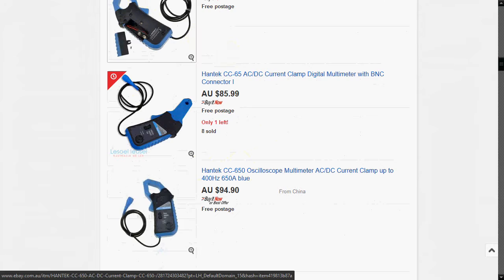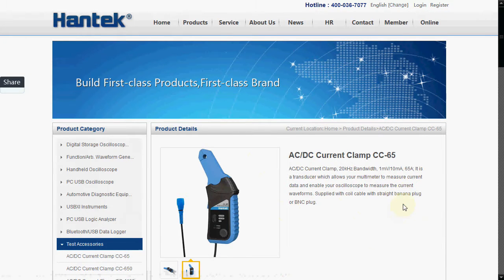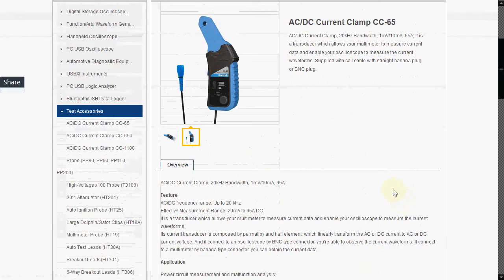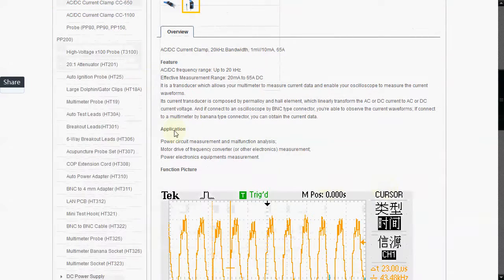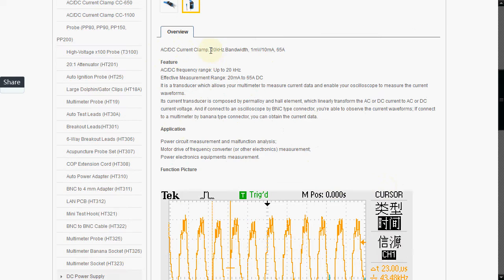So if we switch across to Hantec.com, which is the manufacturer website, you can see there's a product page here and they give you some specs. So it's AC-DC current clamp, 20kHz bandwidth. So you go from DC or up to 20kHz frequency on AC or DC pulsing or all those sort of things.